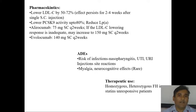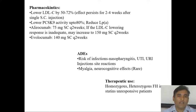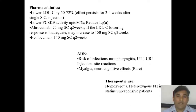Alirocumab 75 mg subcutaneously is effective up to 2 weeks; the dose may be increased to 150 mg. Evolocumab may be given up to 140 mg and is also effective for two weeks. Adverse effects include risk of infection, nasopharyngitis, UTI, injection site reactions, and myalgia. Therapeutic use: homozygous and heterozygous familial hypercholesterolemia.